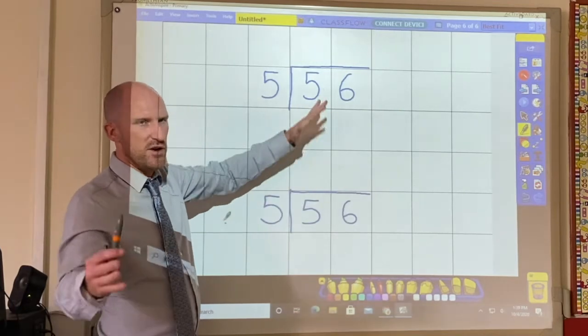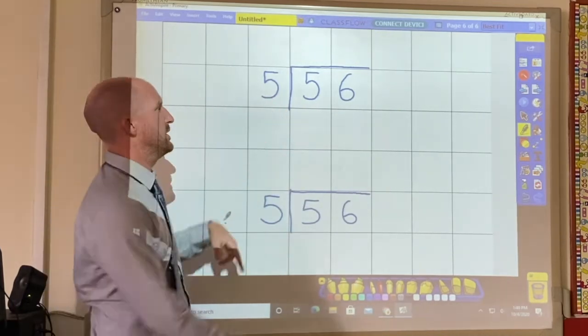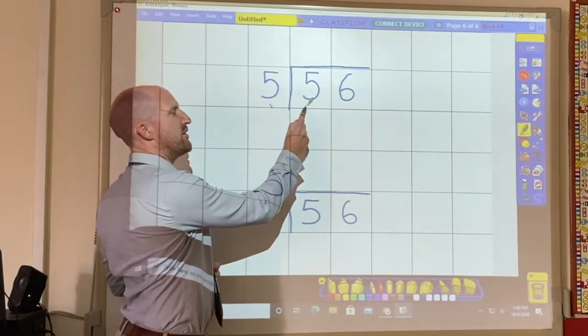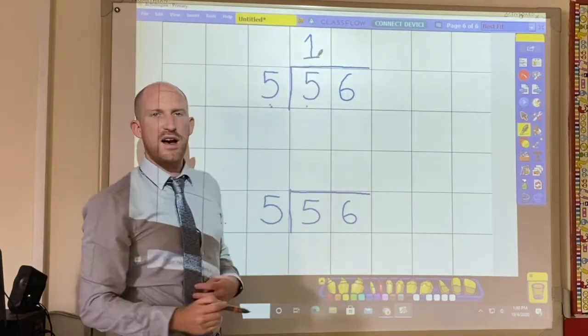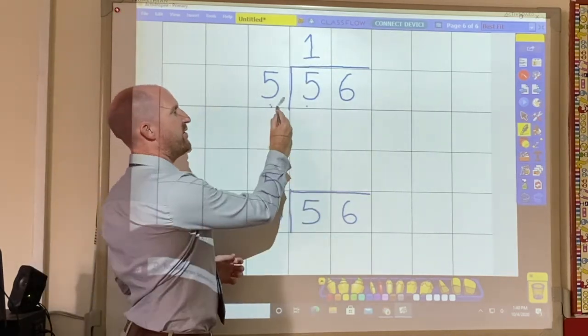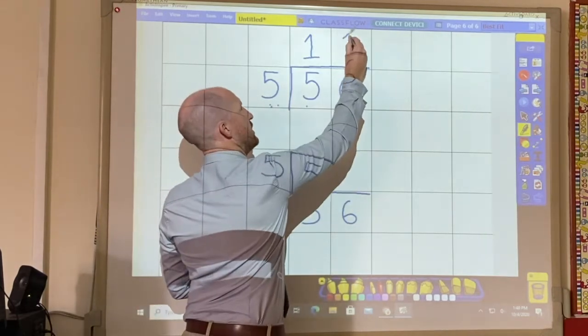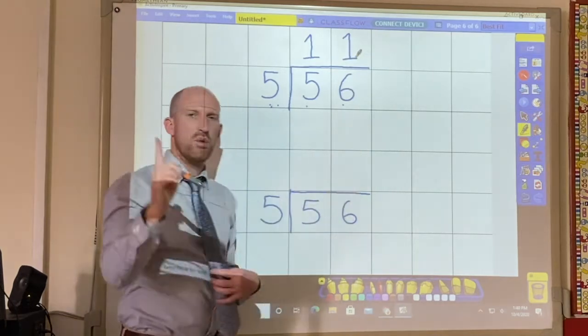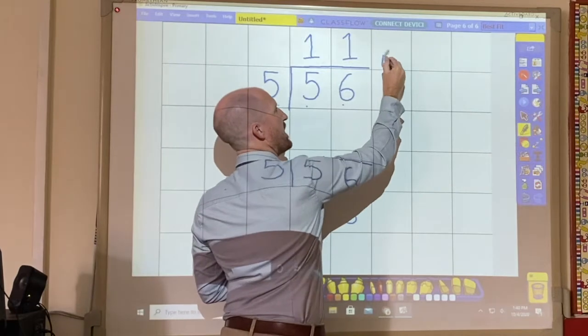Okay so first thing I'm going to do is go through the short division question. So 5, how many 5's are in 5? There is one 5 in 5 and there are no remainders. How many 5's in 6? There is one 5 in 6 and there is one remainder.